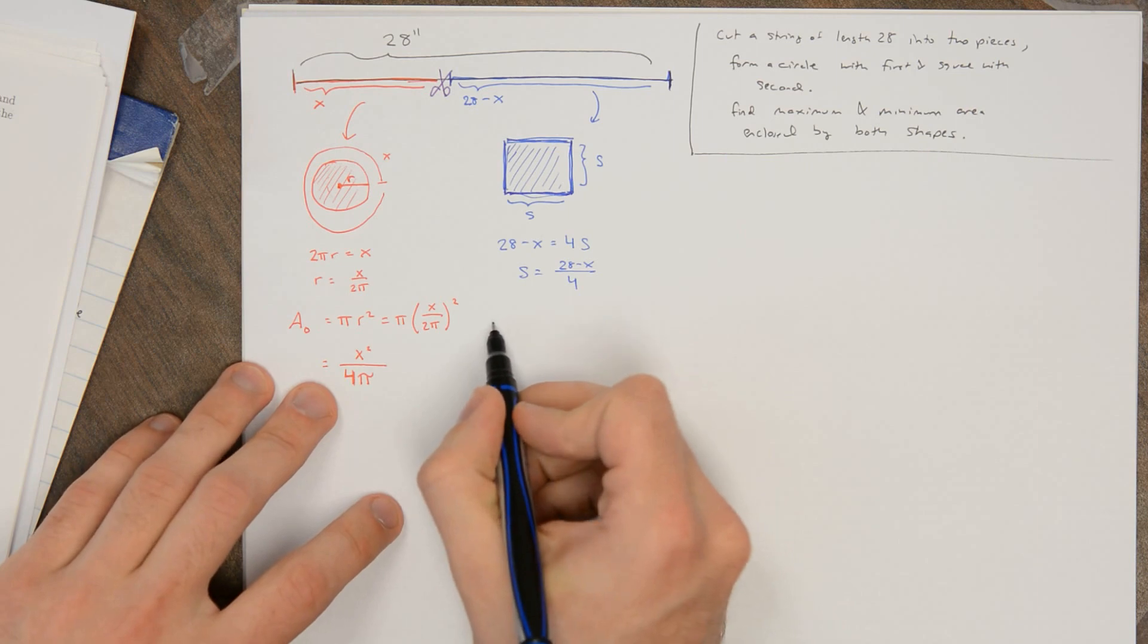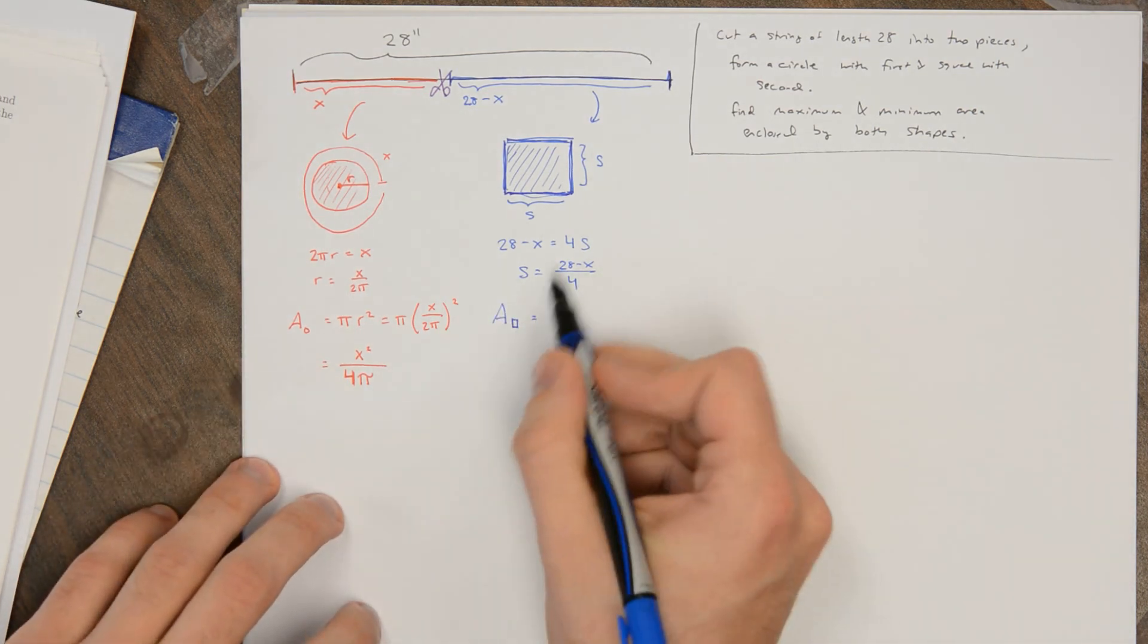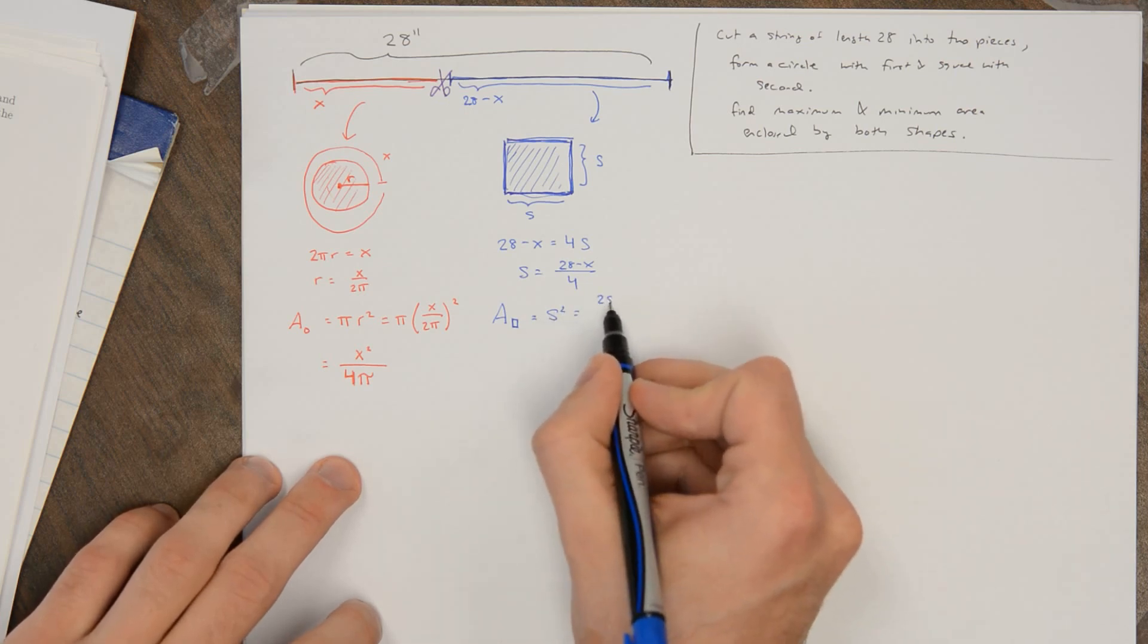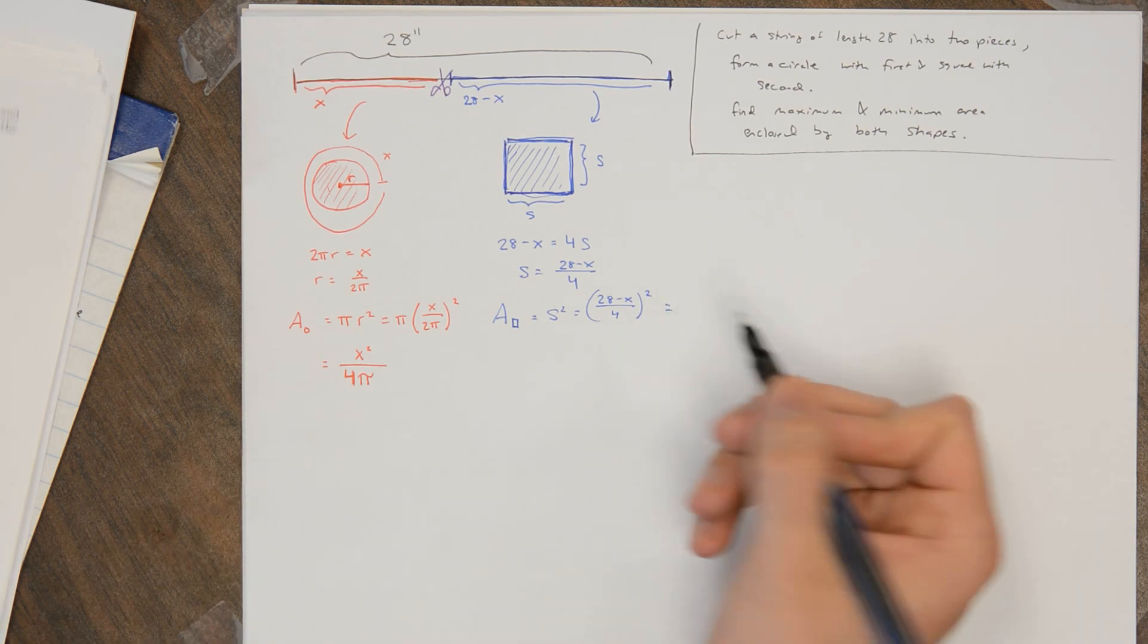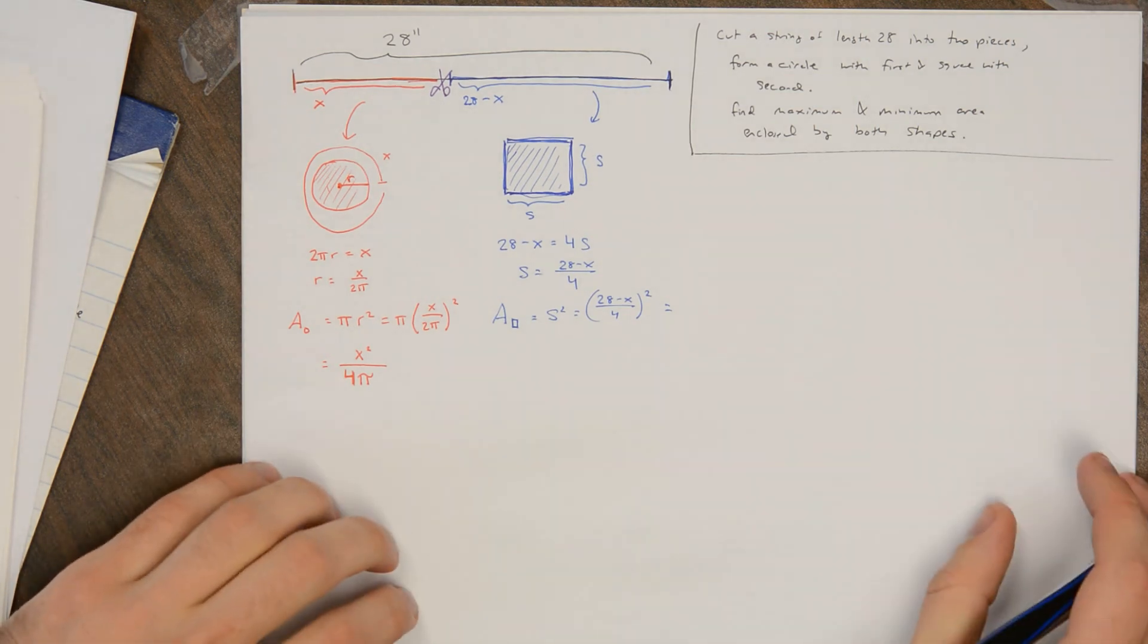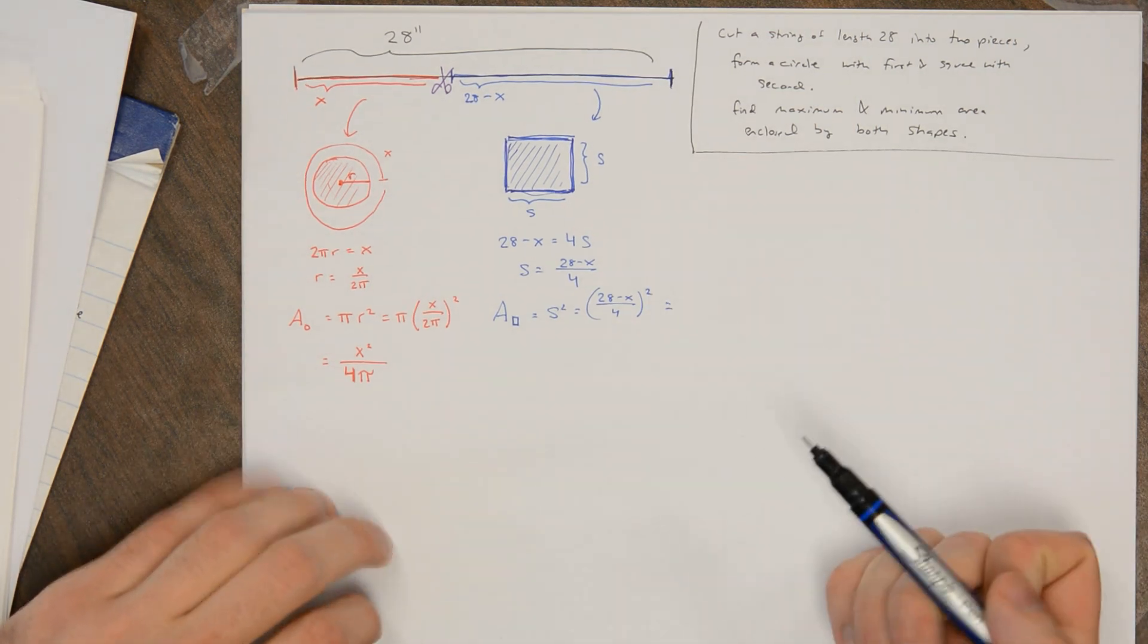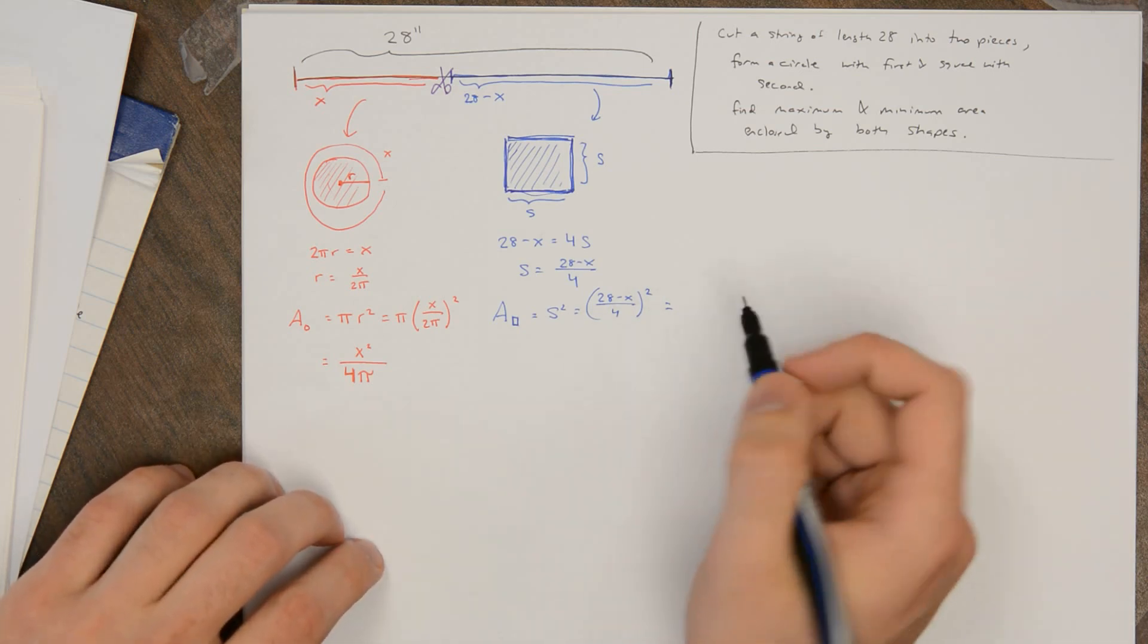That means that the area of the square is s². So that's going to be (28 - x)/4, the quantity squared. And you can expand that if you want to. I don't think I want to right now. I'm going to leave that as is.